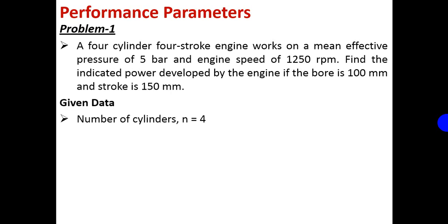It is a 4-cylinder engine, so number of cylinders n is equal to 4, and it is a 4-stroke engine. This is very important — whether it is a 4-stroke or 2-stroke we have to specify. Based on this we decide whether to use n/2 or n. For a 4-stroke engine we use n/2; for a 2-stroke engine we use n in the indicated power formula.